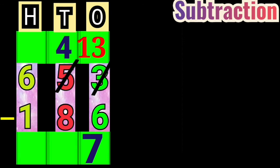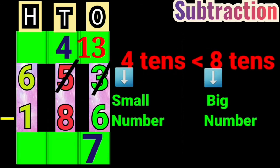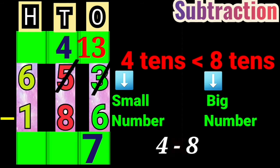Now, observe that 4 tens are less than 8 tens. So, we need to borrow again. But, this time from the 100th place. So, the 100th place is reduced by 1 to become 5. And, the 10th place is increased by 10 and become 14.